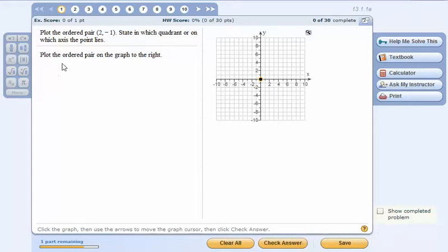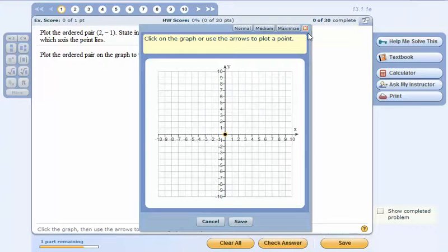In number one it says plot the ordered pair and they give you two negative one. Yours will be different, but one thing is whenever you're working with the graph, do you see this little icon over here? If you click on that, that's going to make it bigger and for some people necessary to be able to see what they're doing.